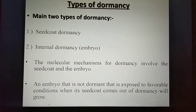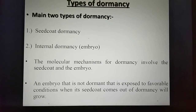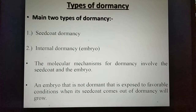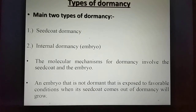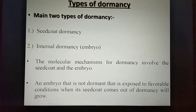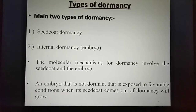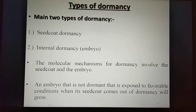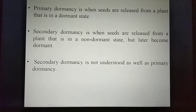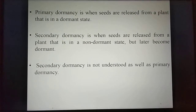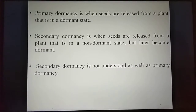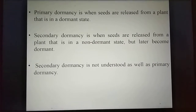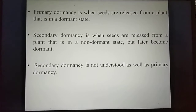There are two main types of dormancy: number one, seed coat dormancy, and number two, internal dormancy. The molecular mechanism for dormancy involves the seed coat and the embryo. An embryo that is not dormant, when exposed to favorable conditions after its seed coat comes out of dormancy, will grow. Primary dormancy is when seeds are released from a plant that is in a dormant state. Secondary dormancy is when seeds are released from a plant that is in a non-dormant state but later become dormant.